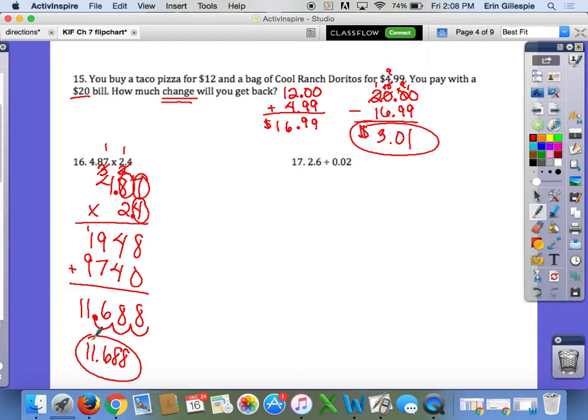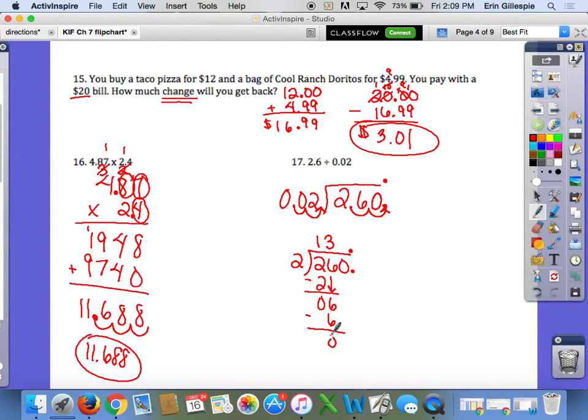Number 17: 2.6 divided by 0.02. The first number is your dividend, the second is your divisor. Your divisor has to be a whole number, so I move the decimal over until it is. I moved it 2 to the right. Whatever I do out here, I do in here: move it over, move it over, move it up. I fill the placeholder with a 0, then move the decimal up. Now 2 goes into 2 one time, 2 goes into 6 three times. I still have a number left, I bring that 0 down. 2 can't go into 0, it goes 0 times. So it's 130, not 13. Be careful of that mistake.